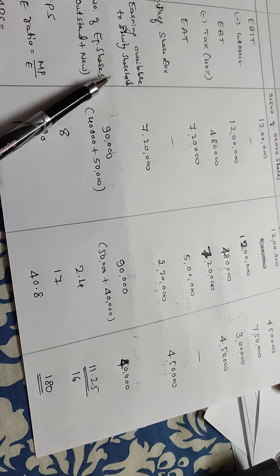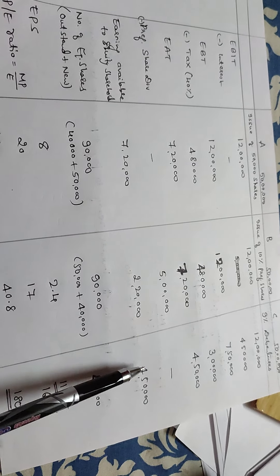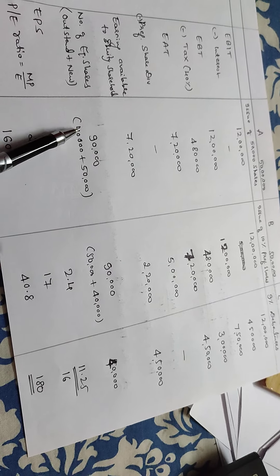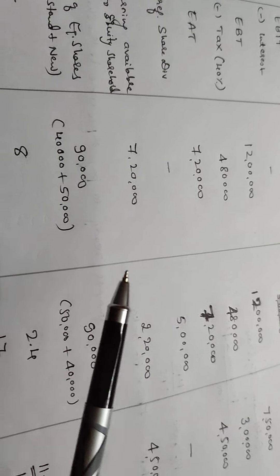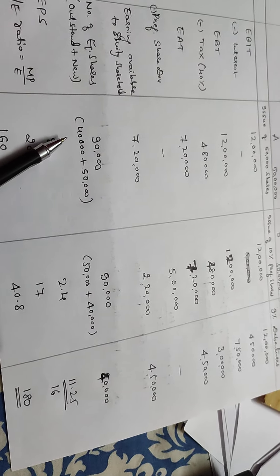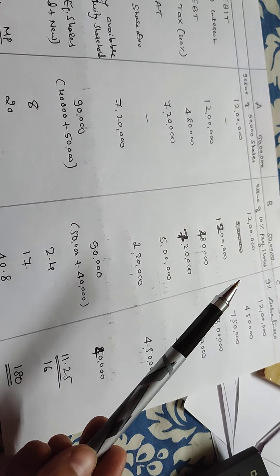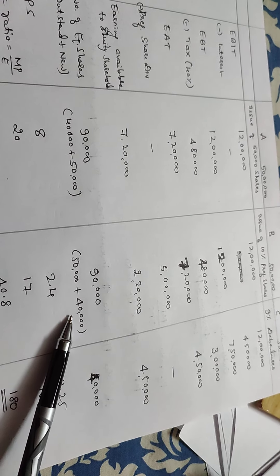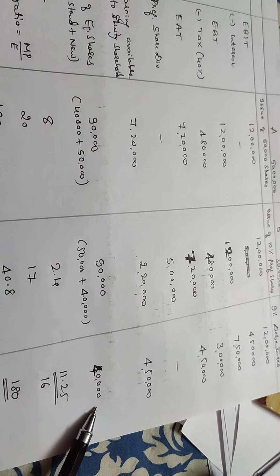Earnings available to equity shareholders: first case 7,20,000; second case 2,20,000; third case 4,50,000. Next, number of equity shares outstanding: existing shares are 40 lakhs divided by face value of 100, giving 40,000 shares. In the first alternative (equity issue), 50,000 new shares are added, so total is 90,000. In the second and third alternatives, shares outstanding remain 40,000.